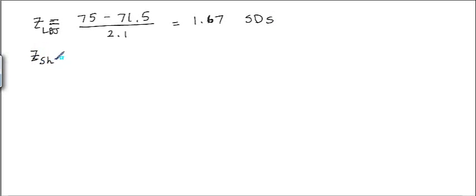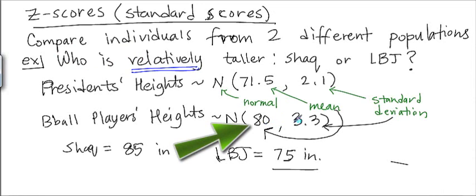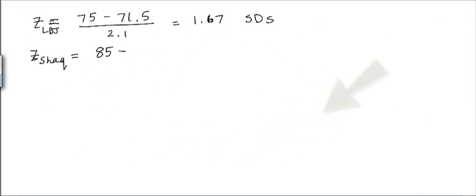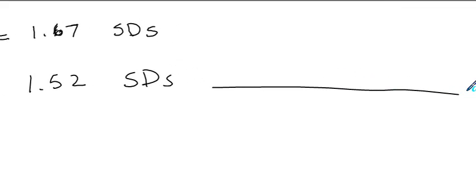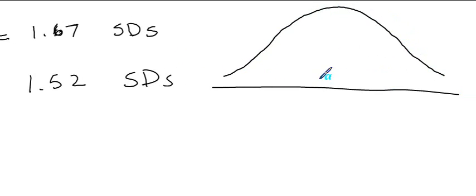For Shaquille O'Neal, he is 85 inches tall. The mean for basketball players is 80 and the standard deviation is 3.3. So: 85 minus 80 divided by 3.3 gives 1.52 standard deviations. Now they both have a standard score and can be directly compared.